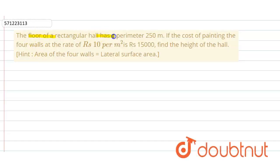of a rectangular hall has a perimeter of 250 meters, and it is given that the cost of painting the four walls at the rate of Rs 10 per meter square is Rs 15,000. We have to find the height of the hall.